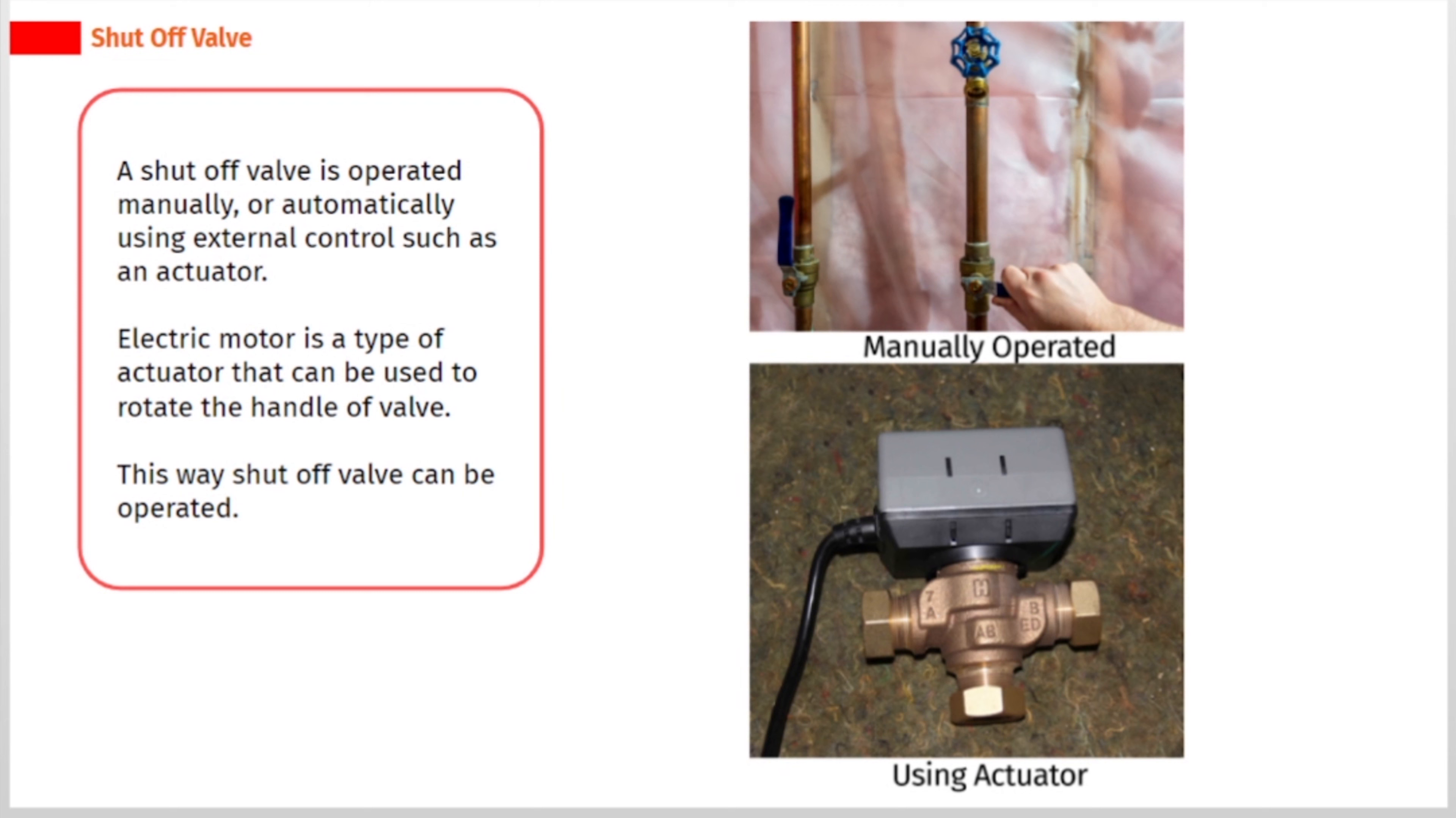A shut-off valve is operated manually, or automatically using external controls such as an actuator. Electric motor is a type of actuator that can be used to rotate the handle of valve. This way shut-off valve can be operated.